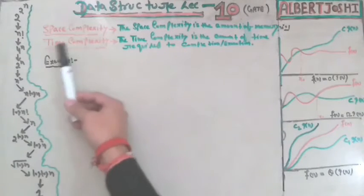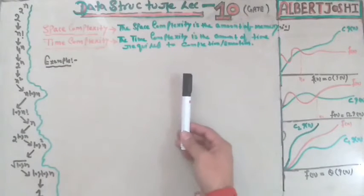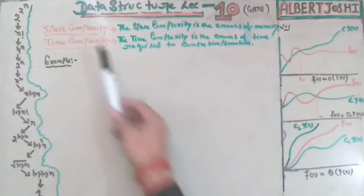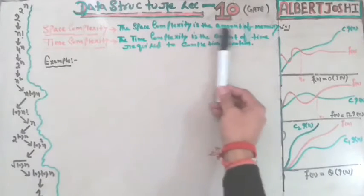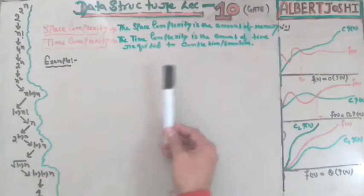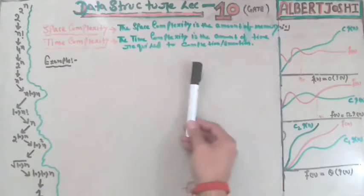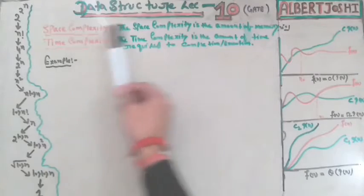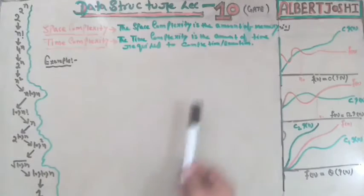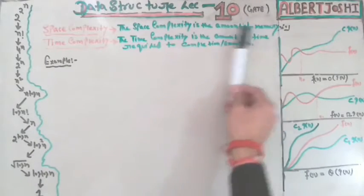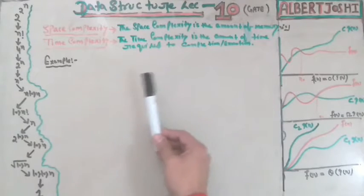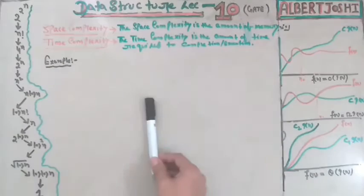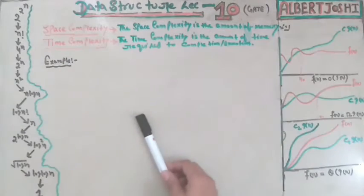Today we are discussing space complexity and time complexity. Space complexity tells us the amount of memory required whenever you have written any algorithm or code in your compiler. If you want to write good code, you have to focus on space complexity — it must be as small as possible.